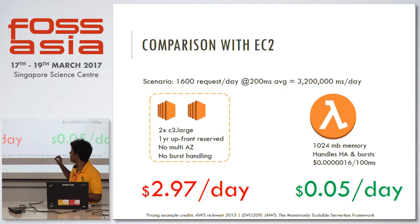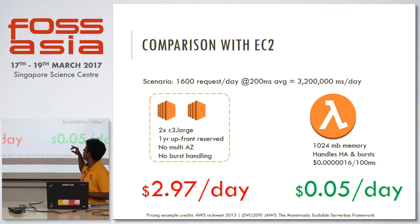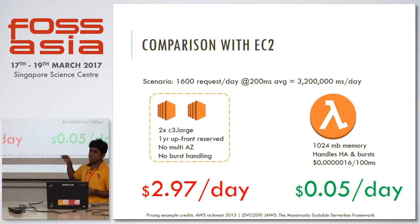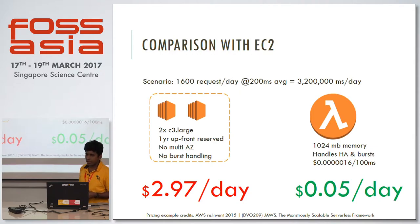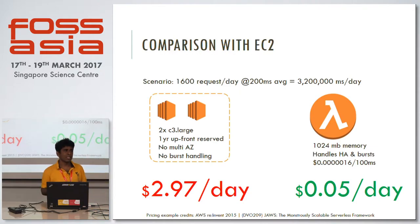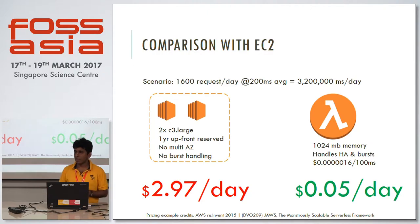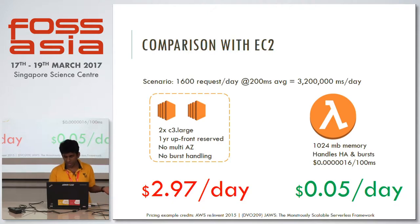Just to get an understanding about the cost, here's a little comparison. Imagine you have a system where you get about 1,600 requests per day and each request takes about 200 milliseconds to process. If you use two EC2 boxes, it will cost you around $3 per day. But using Lambda, you can reduce cost down to about $0.05. In this case, we've been using AWS technology, so a lot of my insights will be towards AWS. But all these things you can do with OpenWhisk, Microsoft Cloud, or even Google Cloud.